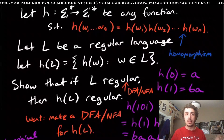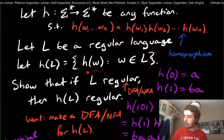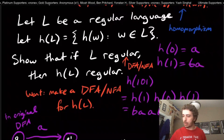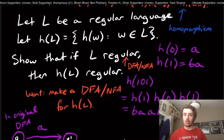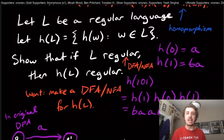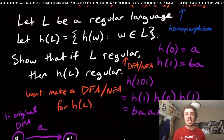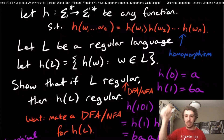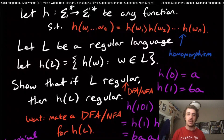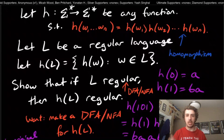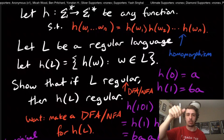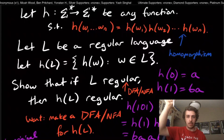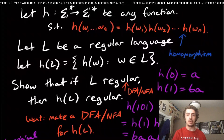This tells us that regular languages are closed under homomorphism: if you have a regular language and apply a homomorphism to it, the result is regular, because we can exhibit an NFA for it. Since DFAs and NFAs are equivalent, H(L) is in fact regular. I hope that was interesting — leave a comment below if you found a different approach. Please like and subscribe, and you can also support the channel via Patreon. See you next time!